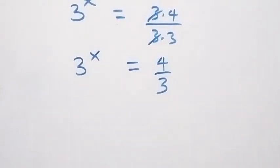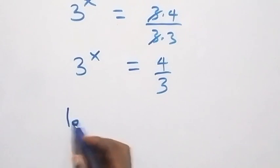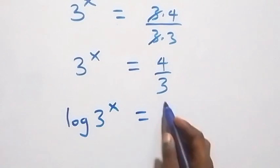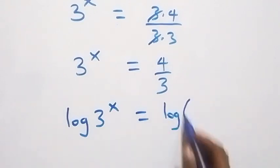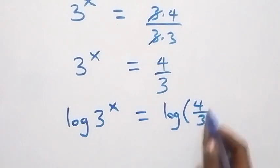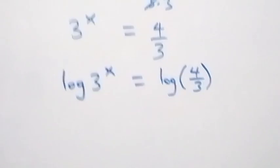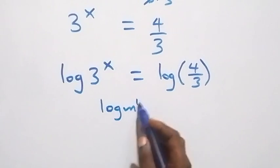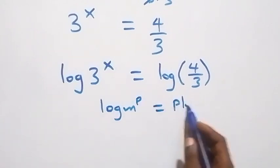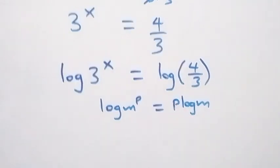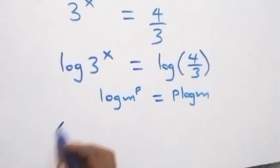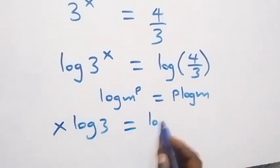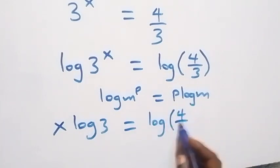Next step, we take the log on both sides. We have log of 3 raised to power x equals log of 4 over 3. Then we apply the power law of logarithms — log m raised to power p equals p log m — so what we have becomes x log 3 equals log(4/3).